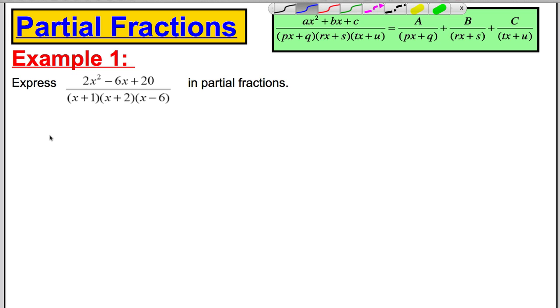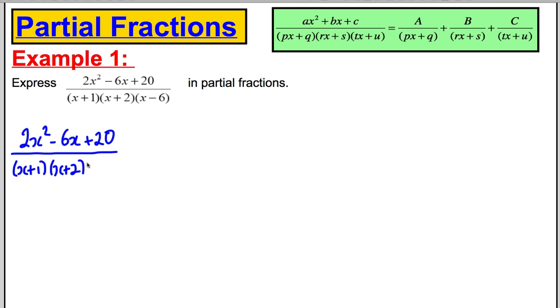And it has three distinct linear factors. Therefore we're going to start off by saying that (2x² - 6x + 20) divided by (x + 1)(x + 2)(x - 6). Well, that is identical to, can be written using this rule as some number over the first factor plus some number over the second factor plus some number over the third factor, where a, b, and c we need to find out.